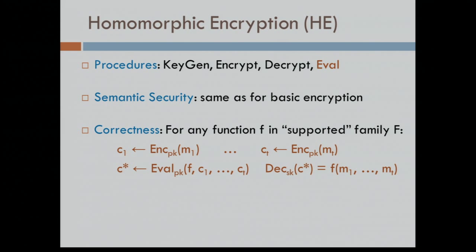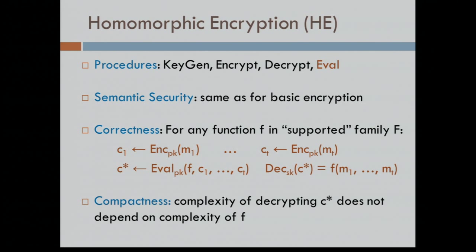The thing that makes it special is the correctness requirement from the evaluation. What we want is: if you have a bunch of messages and you encrypt them, then you apply the evaluation procedure on the resulting ciphertexts with some particular description of a function F, and decrypt the result, what you get is the application of F to the underlying messages. The compactness requirement says we want the complexity of decrypting the result c* to be independent of the complexity of computing F.